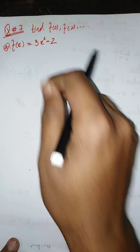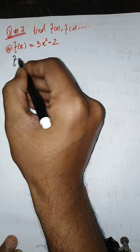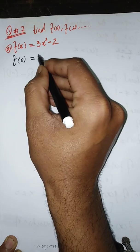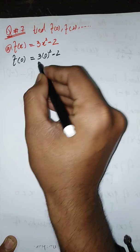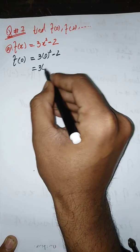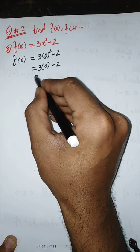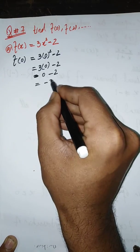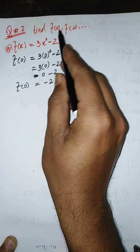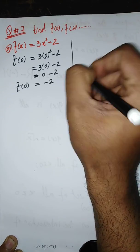We have to find f(0), which means we replace x by 0 in our function. So we get 3 times 0 squared minus 2. Since 0 squared is 0, and any term multiplied by 0 becomes 0, we get 0 minus 2, which equals -2. So for f(0), the output is -2.